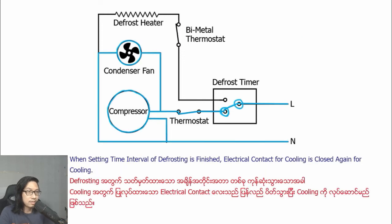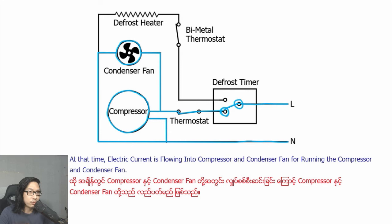When the set time interval for defrosting is finished, the electrical contact for cooling closes again for cooling. At that time, electric current flows into the compressor and condenser fan, running the compressor and condenser fan again.